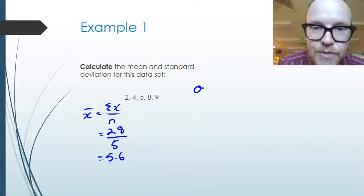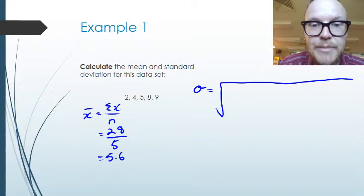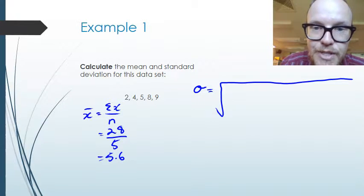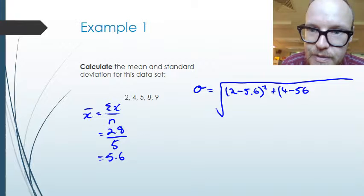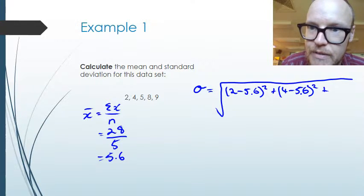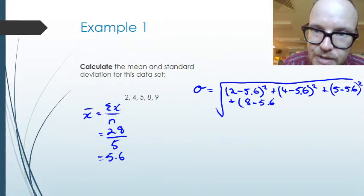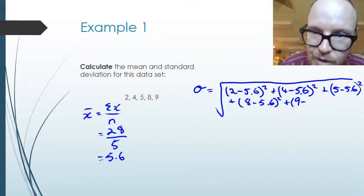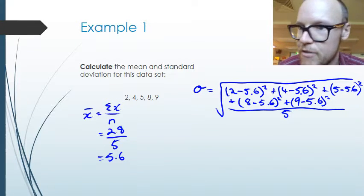To work out the standard deviation sigma, we take the square root of the sum of all deviations from the mean squared, divided by how many numbers we have — 5 in this case. So we compute: (2 − 5.6)² + (4 − 5.6)² + (5 − 5.6)² + (8 − 5.6)² + (9 − 5.6)², divide by 5, and take the square root.